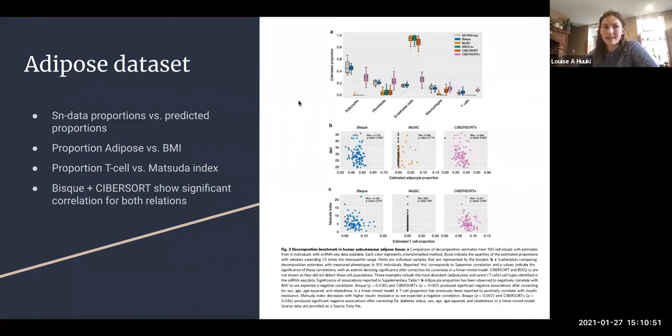But that is relying on the assumption that the proportion of that cell type in the single nucleus data is like the underlying distribution of that cell type, which might not be great. Then the second thing they look at is the proportion of adipose cells versus BMI. They assume that the more adipose cells, the higher the BMI.